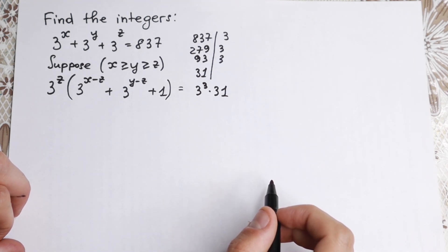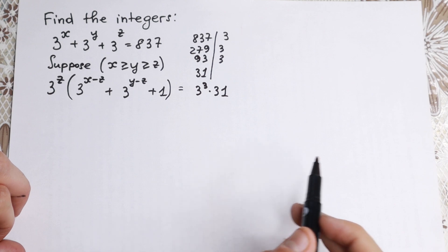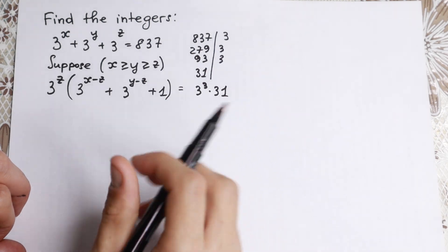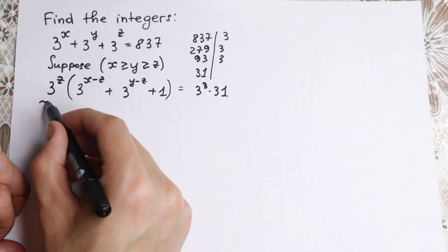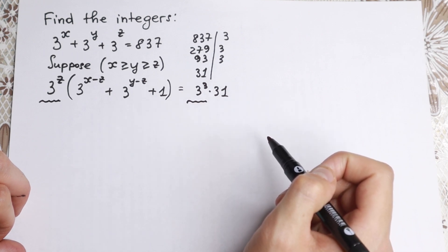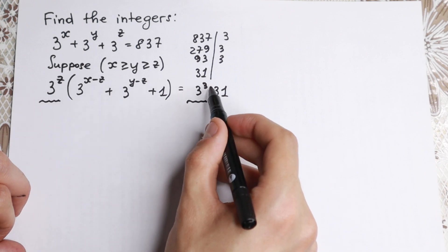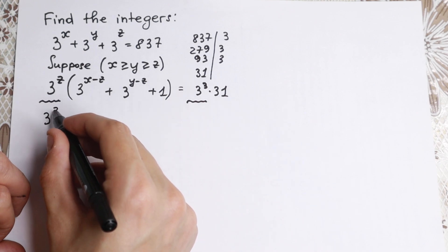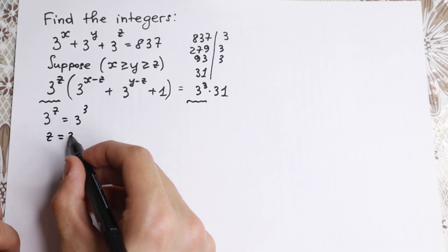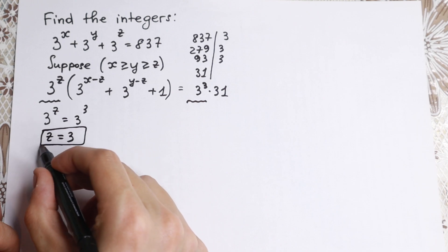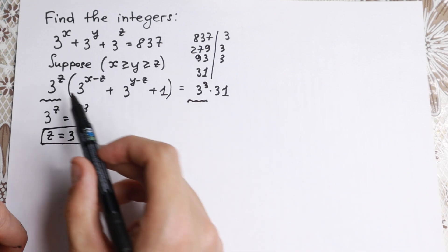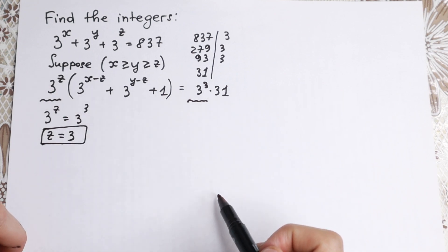Now I want to highlight a really interesting moment. On the left side we have 3 to the power z factored out, and on the right side we have 3 cubed times 31. The only case this equation works is when 3 to the power z equals 3 cubed. So z equals 3. I hope you understand this step.